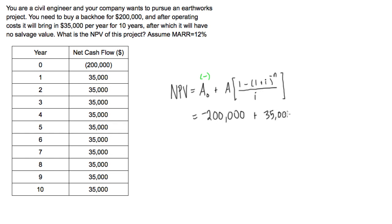35,000 times all this stuff. We have 1 minus—we're just going to combine this—this will be 1.12, and this is to the power of negative 10, and this is all over 0.12.